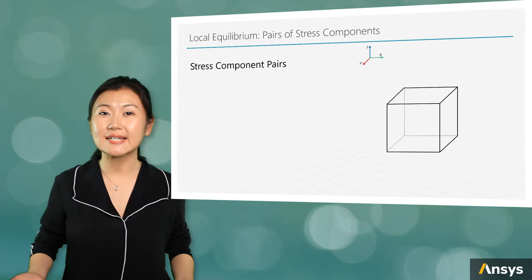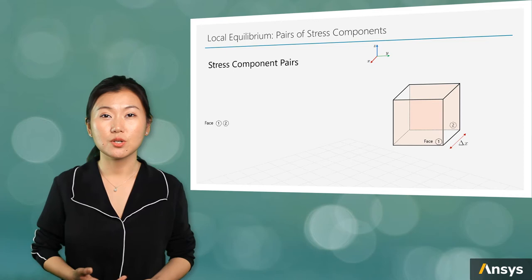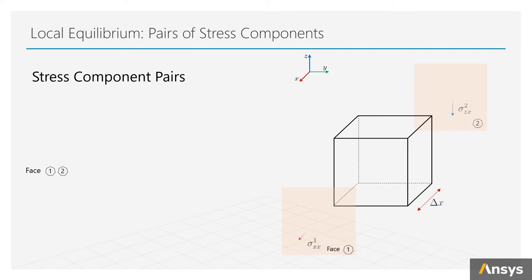Now, let's discuss the relationship between the stress components on different surfaces. Between the six surfaces on the cube, there are three parallel pairs: Surface 1 and 2, surface 3 and 4, and surface 5 and 6. Let's have a look at surface 1 and 2. They both have sigma xx. What's the relationship between these two?